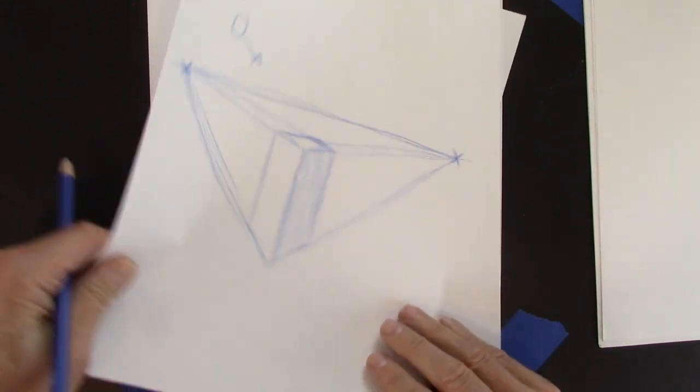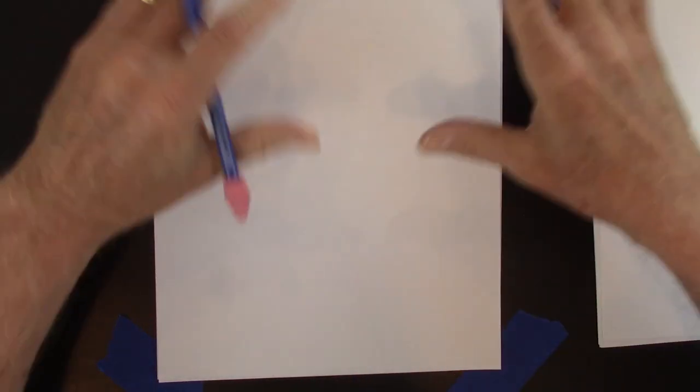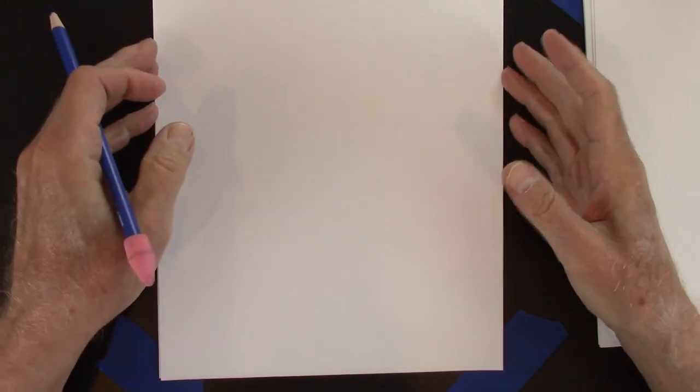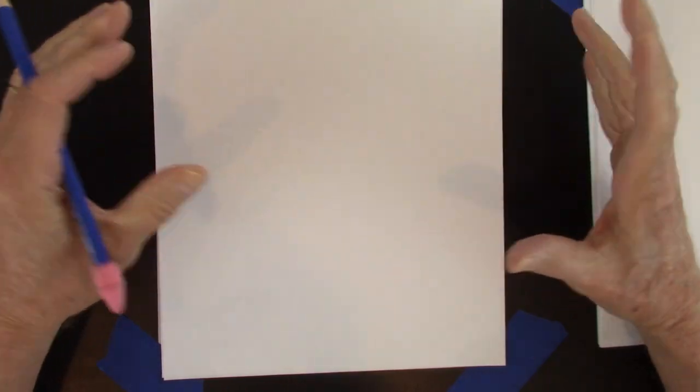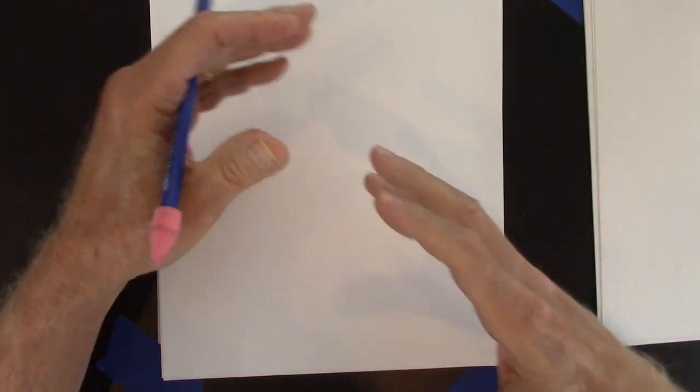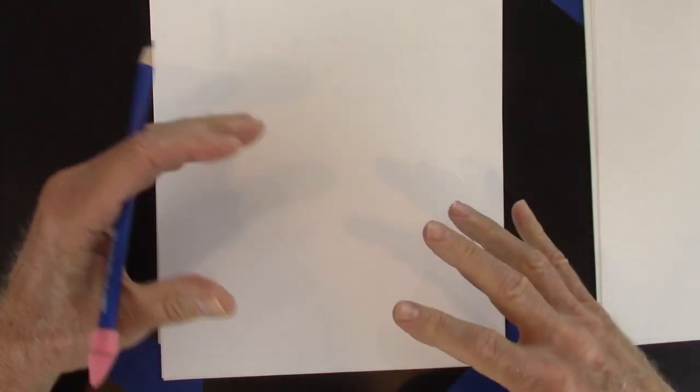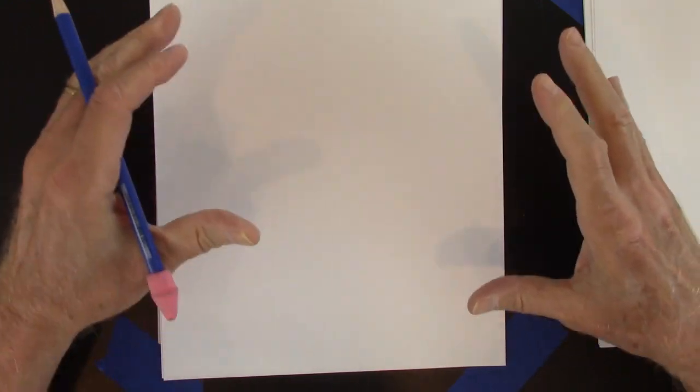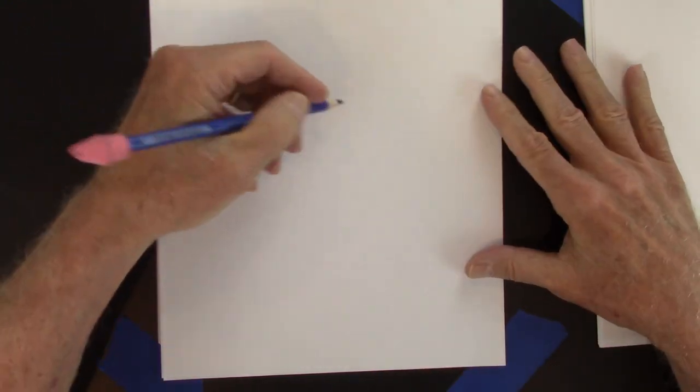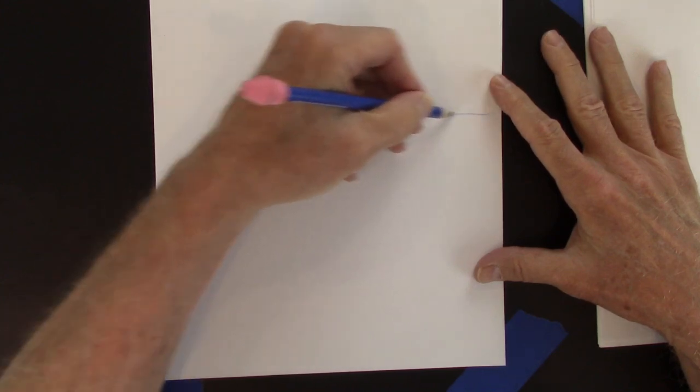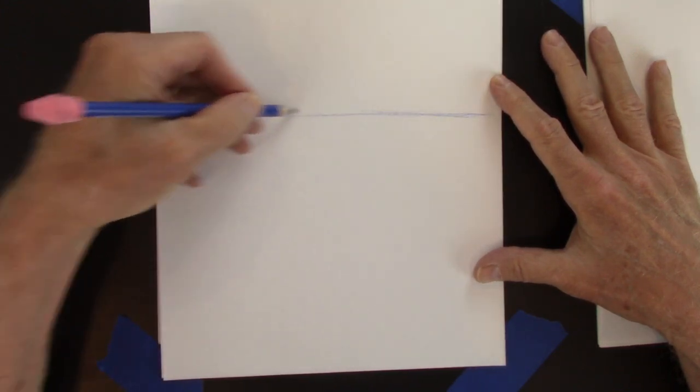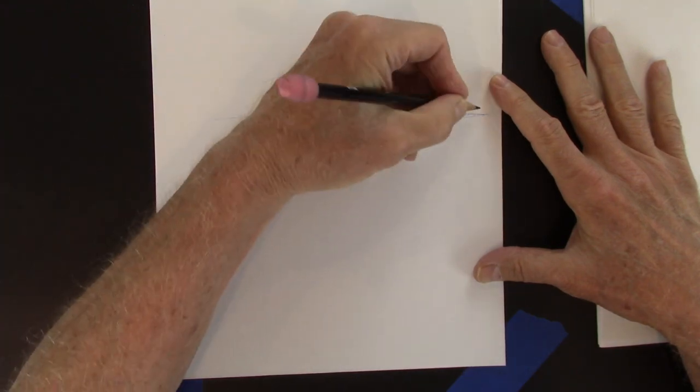But we're not talking about that today. We're going to take all those vanishing lines out of here and use some other principles. Because suppose you're in nature. Now, how are you going to draw nature with a vanishing line? I mean, a tree doesn't have a corner. A rock doesn't always have a corner. So let's figure this out. We're going to use some principles based on overlap and layering. And you'll see that they're actually very useful.